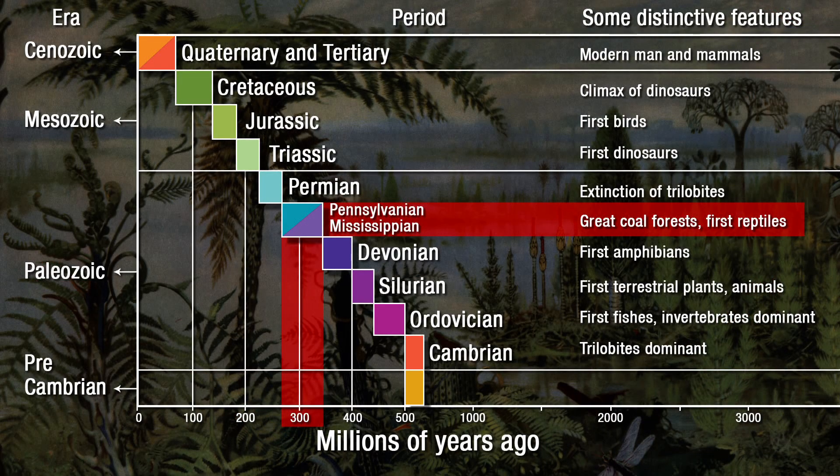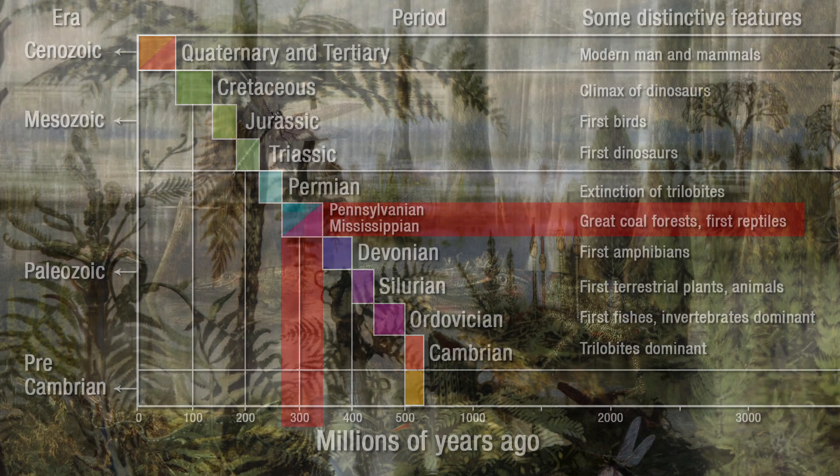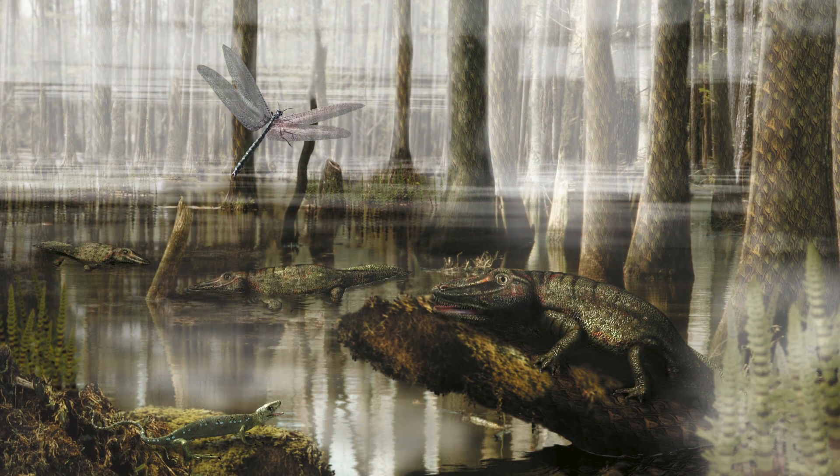A lot of water, a lot of forests, heavy plant growth. So this is a green, swampy, birdless world. No dinosaurs yet.